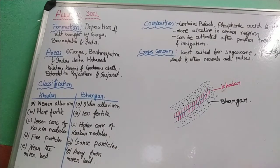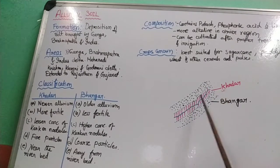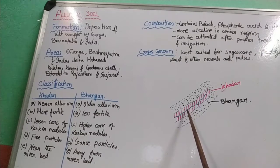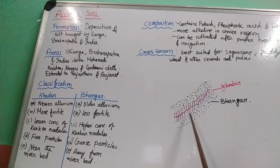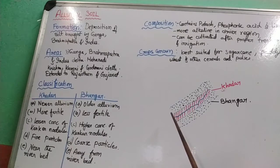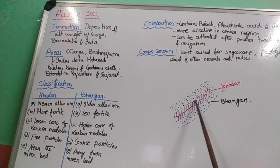Khadar is found near the riverbed and Bhangar is found away from the riverbed. As shown in the diagram, the blue line is the river. Just near the riverbed you have deposition of Khadar soil, but farther away you have deposition of Bhangar soil. During the monsoon the river floods and extends its banks. When it does, finer silt particles are deposited on the land, and when the water recedes, these particles remain — giving a fresh layer of Khadar soil close to the riverbank.